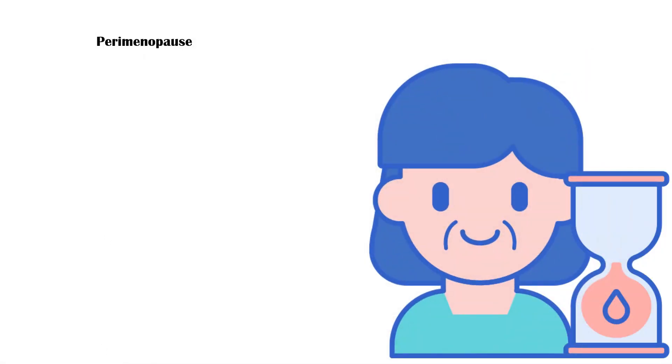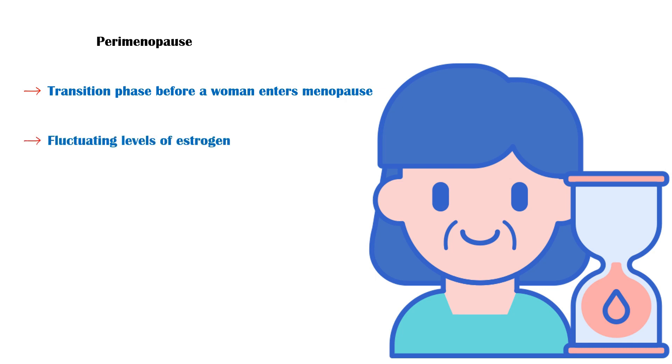Perimenopause. Perimenopause is the transition phase before a woman enters menopause. Fluctuating levels of estrogen during this time can lead to menstrual irregularities.